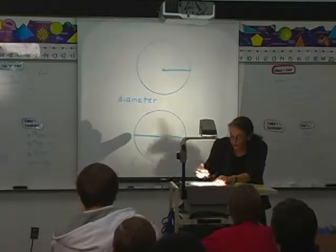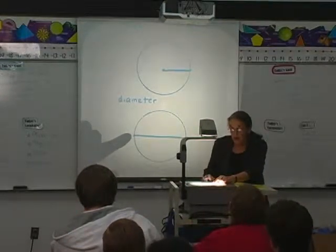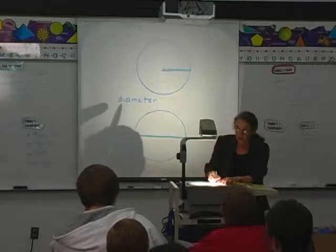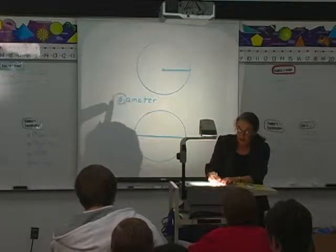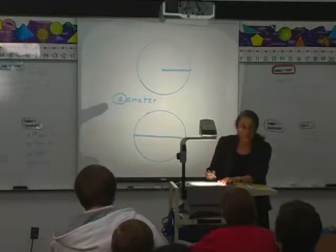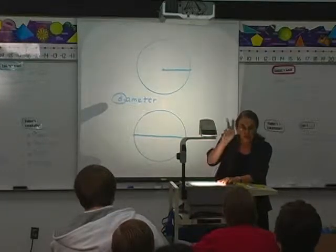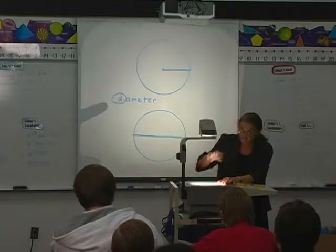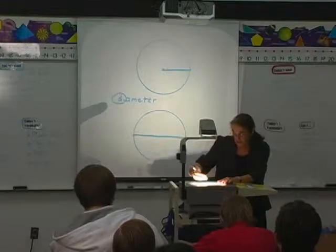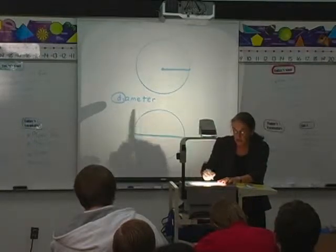It could go any direction. Let's look at this word: 'di' means two, so it could divide the circle into two. 'Meter' is measure. Get ready to tell me if something is a radius or a diameter.